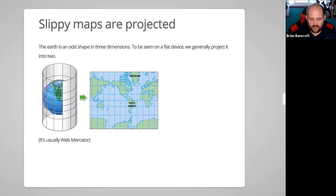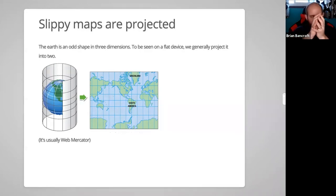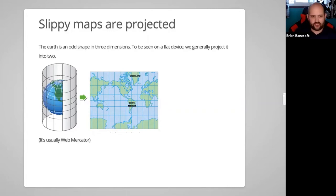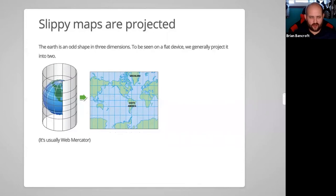One characteristic of web maps is that they are projected. Earth is neither a perfect flat surface nor a perfect sphere — it has its own shape called the geoid. Most web maps use Web Mercator, a cylindrical projection where the globe is projected onto the interior of a cylinder, then sliced and opened into a rectangle. This distorts areas near the poles — for instance, Greenland appears much larger than it is. America is actually about 4.5 times larger than Greenland.